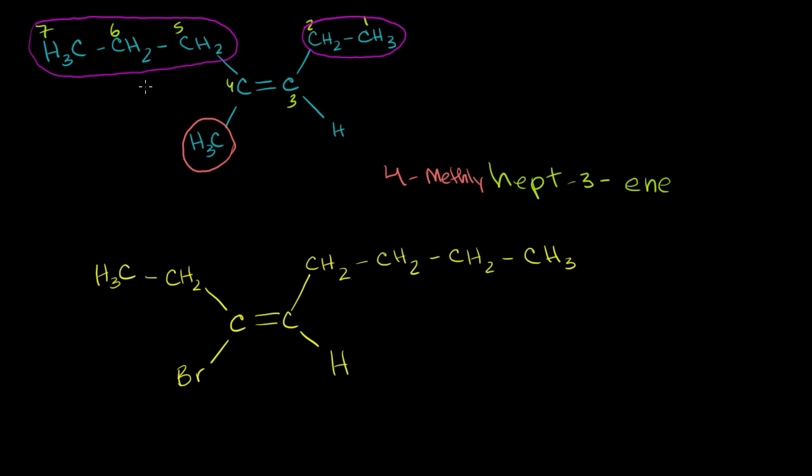So now when we're trying to decide whether it is Entgegen or Zusammen, we look at these two groups. And we see that they are sitting on the same side of the double bond. They're both above the carbons. They are closer to each other. So this molecule is Zusammen, which is on some levels you can think of as the same thing as cis. But cis and trans stops applying when you start having more than two functional groups. In this case, we have three. So we would call this Z-4-methyl-hept-3-ene, and that's because the higher priority functional groups are on the same side of the double bond.